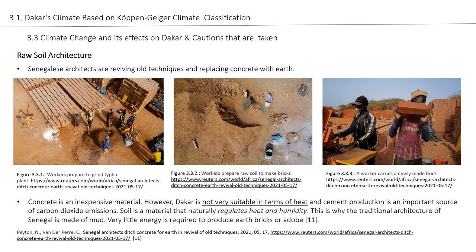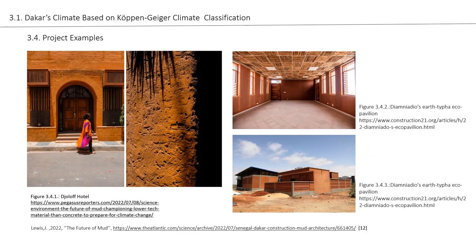Here we are seeing some architectural project examples using old techniques and materials. The first one is a historical hotel called Koloff Hotel, which is made of adobe. The second project is a newly completed project called the Diminos Earth Type Eco Pavilion, built using earth bricks and old techniques.